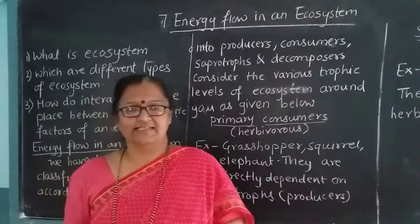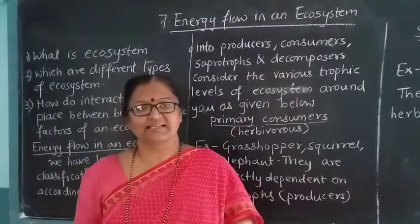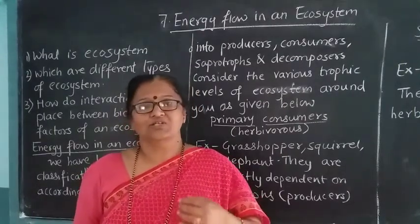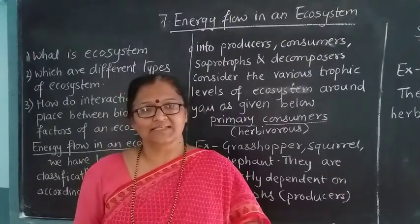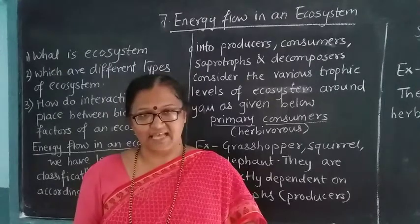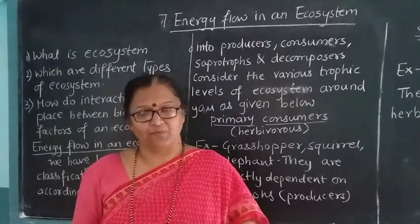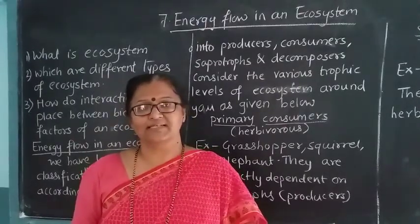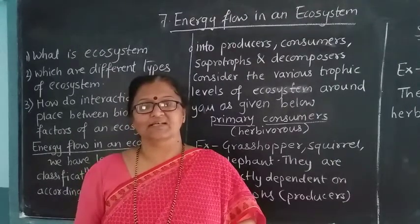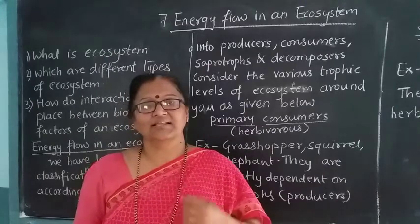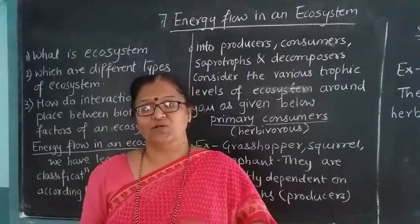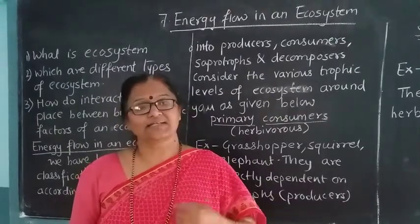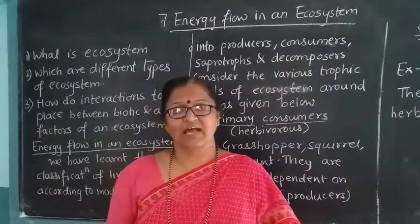Before going to this lesson, what we have to study? We have to study the various ecosystems, the various cycles, the biogeochemical cycle, then carbon cycle, nitrogen cycle, oxygen cycle. Then what is food chain, what is food web, the interrelation between animals, what are herbivorous animals, carnivorous animals, omnivorous animals. We also have to study what are producers, who are consumers, who are decomposers.